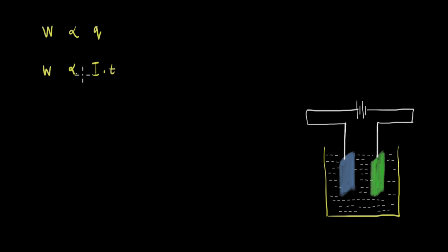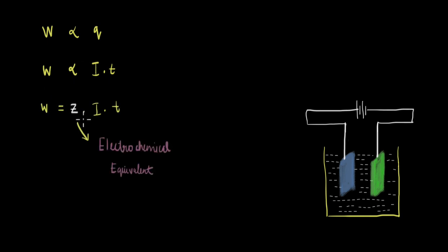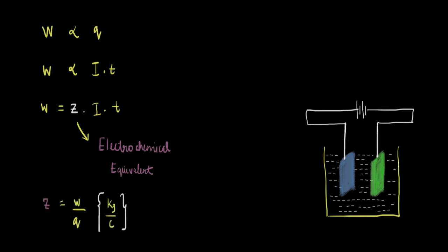Now, if we get rid of this proportionality, we can write this as W = Z × I × T, where Z is the constant called the electrochemical equivalent. If we rearrange this and look at the units of Z, we realize that Z has the units of mass per coulombs, because Z is essentially W divided by Q. So Z will have units like kg per coulomb or grams per coulomb.